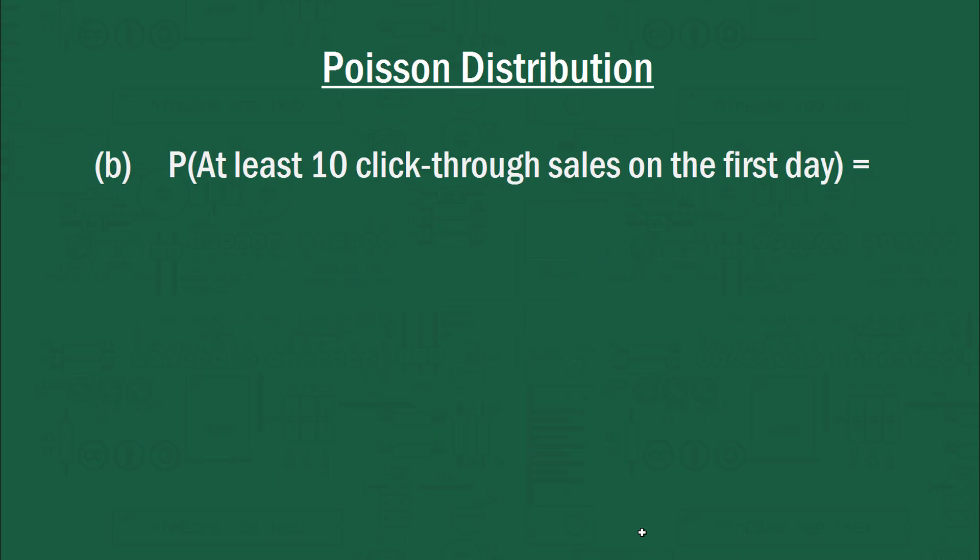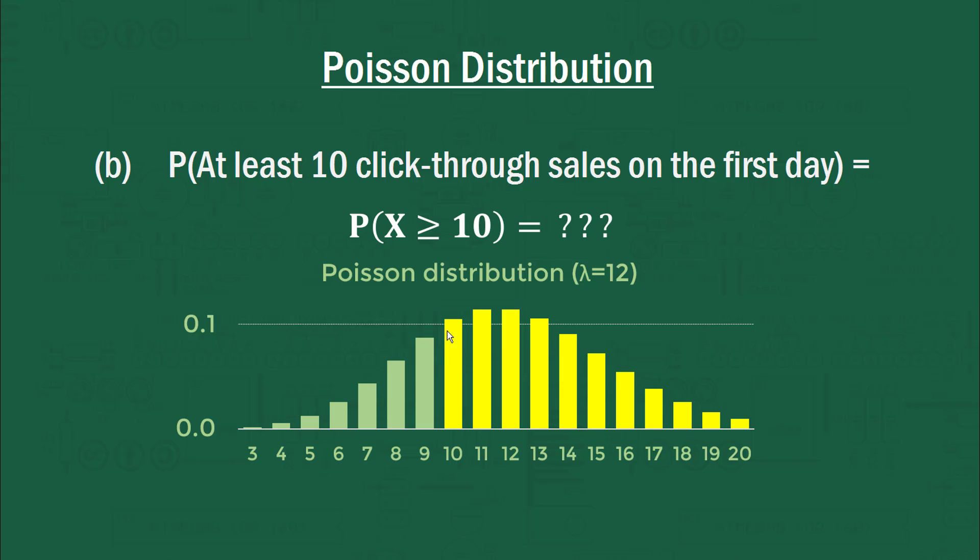All right, part B. What's the probability of at least 10 click-through sales on the first day? So how do we find the probability of X being greater than or equal to 10? Now that's equivalent to this whole yellow area over here if we sum up all of those together, going from 10 up until infinity. Well, unfortunately, in Excel, there's no way of finding the probability of getting a value or higher. So we're going to have to use the CDF, which is the probability of getting a value or lower, and subtracting it from 1.